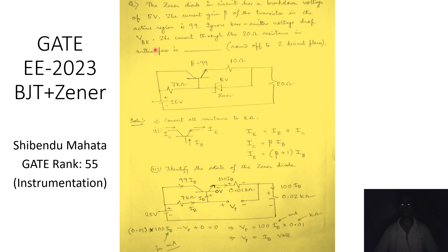Interestingly, they have mentioned that the base-to-emitter voltage drop should be ignored, meaning we take VBE equal to zero volts. Normally VBE is taken as 0.7 volts, and in previous years' GATE questions for instrumentation, electrical, and EC, VBE was specified as 0.7 volts. Here, however, we work with VBE equal to zero volts, and our objective is to find the current flowing through the 20 ohm resistance.